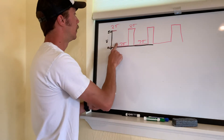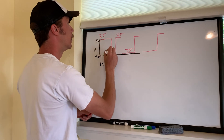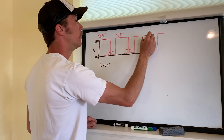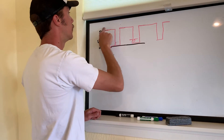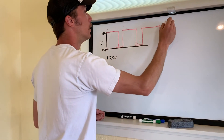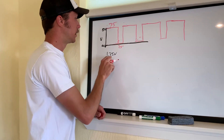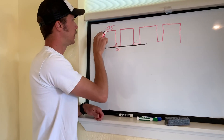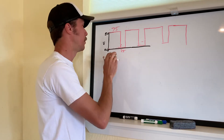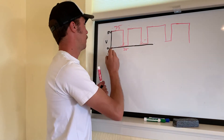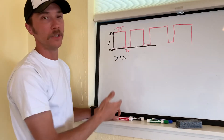I can change this by changing the on time. Let's go 75% on and 25% off — the opposite of before. Now we have 75% of 5 volts. Since 25% gave us 1.25 volts, 75% gives us 3.75 volts as our simulated output voltage.